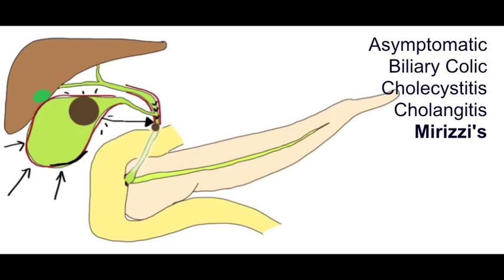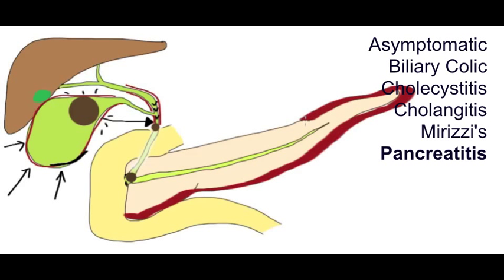Now let's take our gallstone and see where else it might lodge. Ah yes, the ampulla of Vater. And as we can see here, this is the major duodenal papilla. And a stone here can block the main pancreatic duct. So another complication of gallstones is acute pancreatitis.